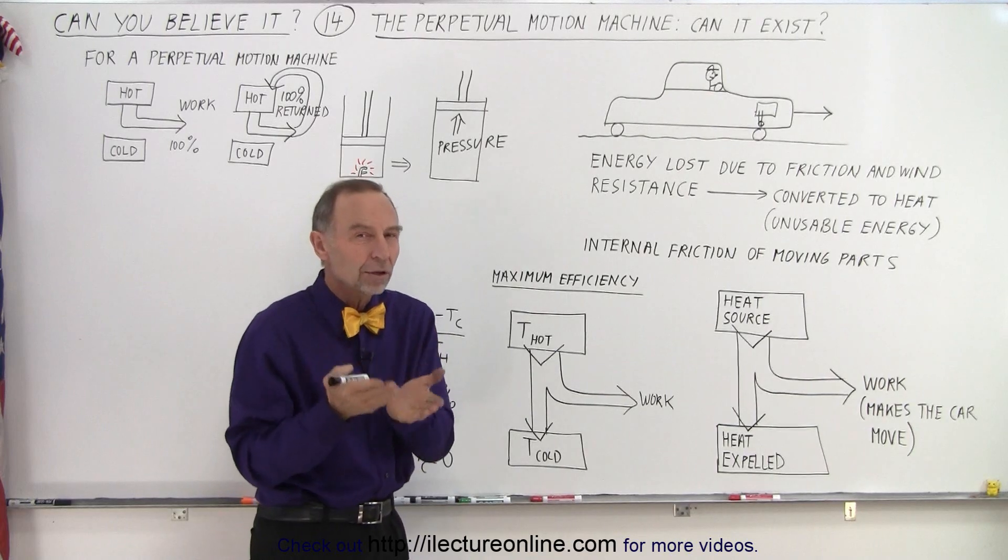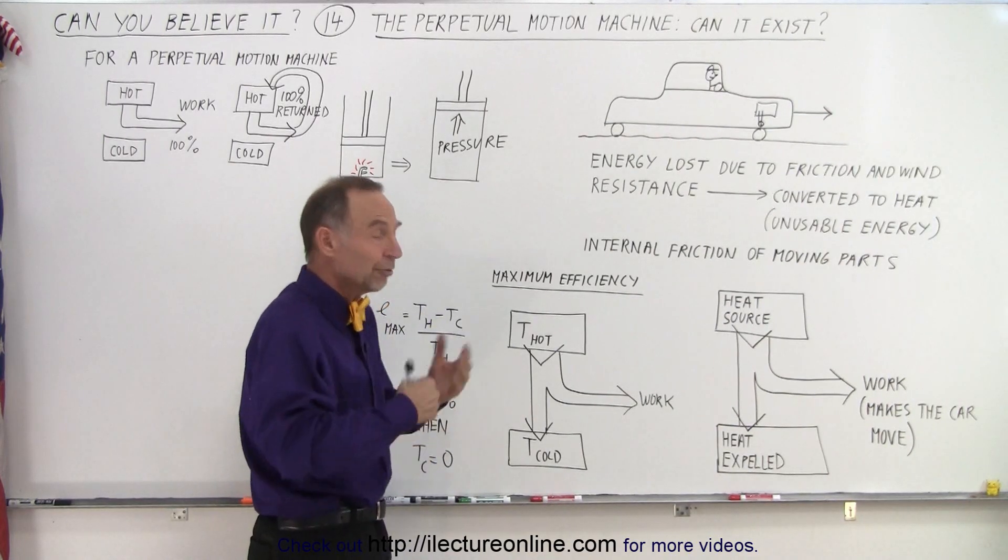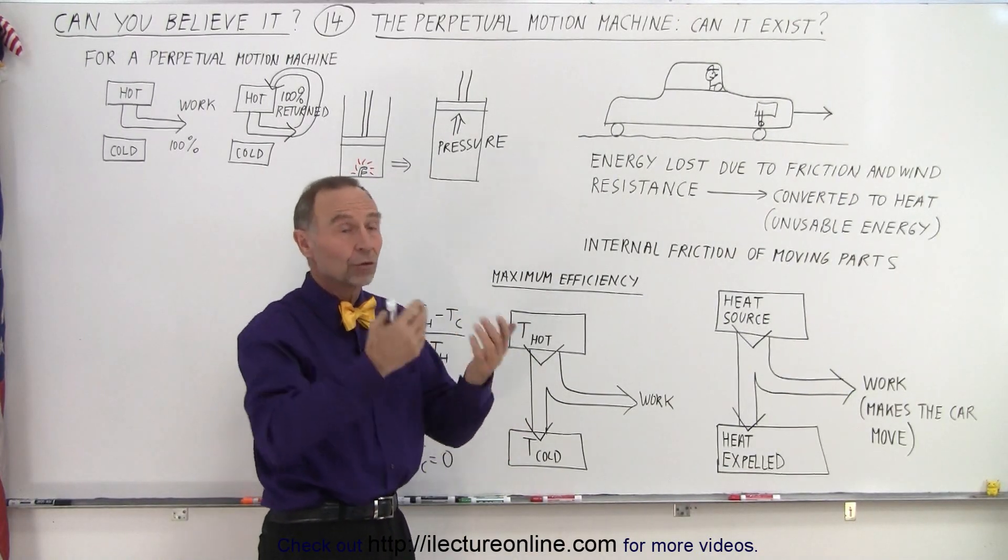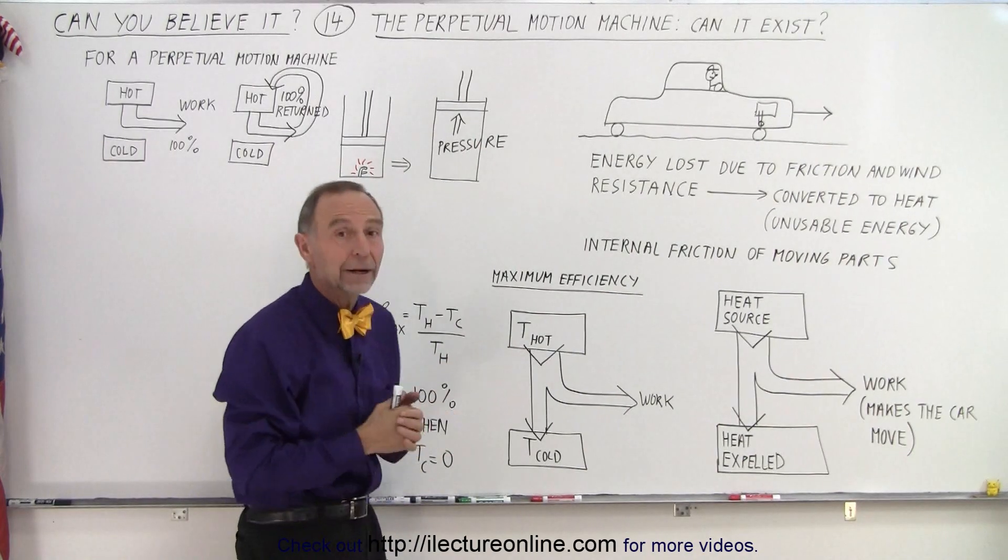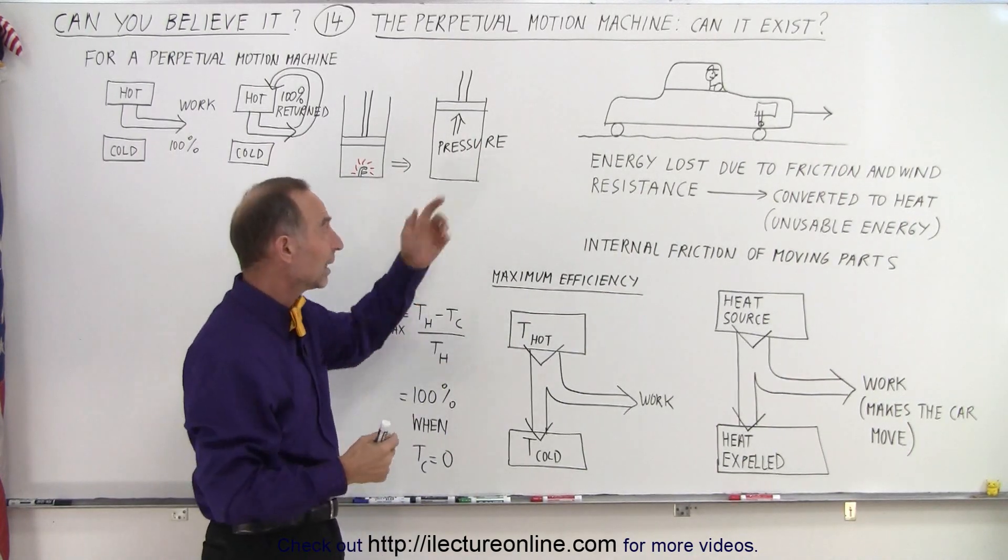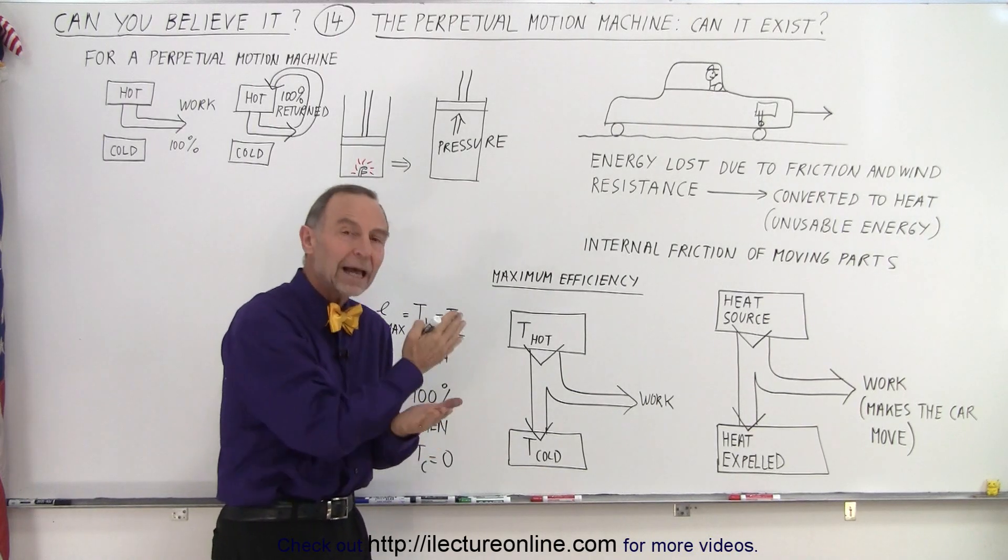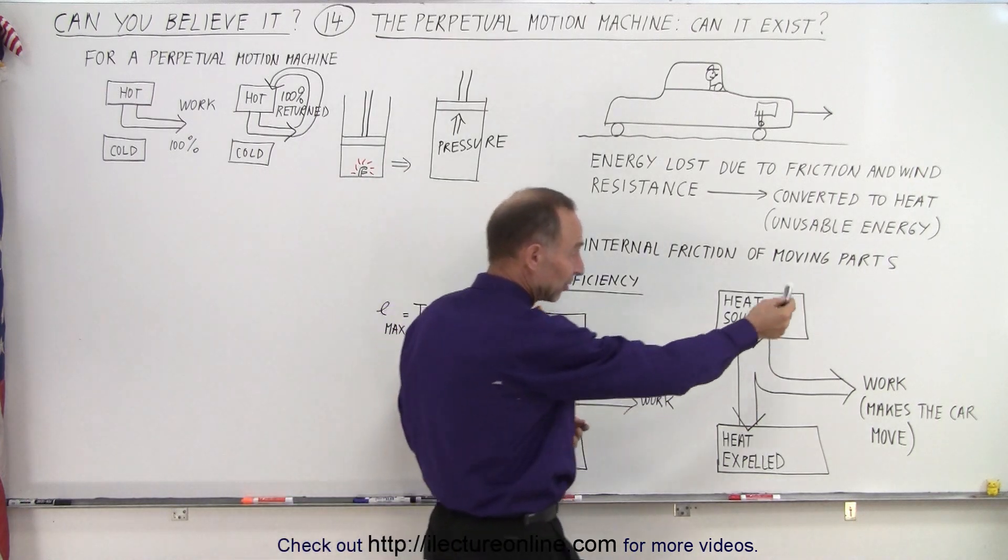And so in the end, only a part of the energy available is used in propelling the car. At the very end, we expel the gases because we want to get rid of the burnt gases and put more air and fuel mixture in the cylinders to start the process over again. Those burnt gases contain heat, and that heat is then lost.